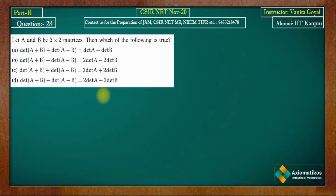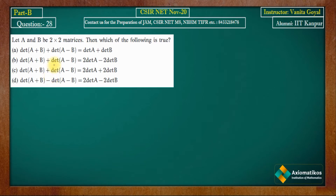Hello everyone, welcome to the solution series for CSIR NET November 2020. This is Question 28 from Part B. The question asks: let A and B be two 2×2 matrices, then which of the following is true? We have to check the determinant of (A+B) plus determinant of (A-B), and determinant of (A+B) minus determinant of (A-B).